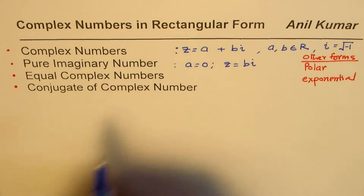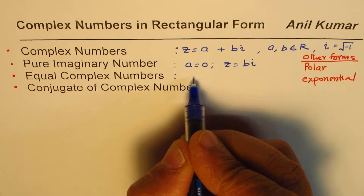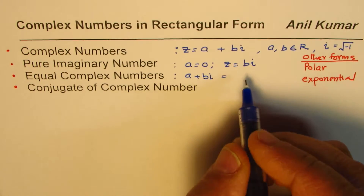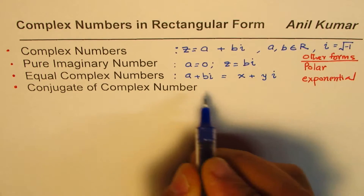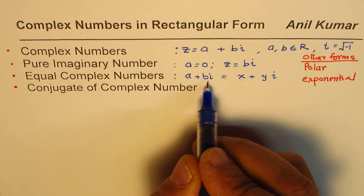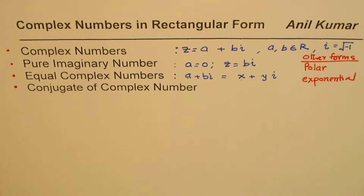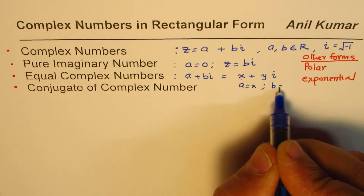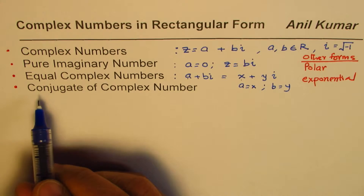The second thing we're going to understand is when two complex numbers are equal. If we have a complex number a plus bi equal to another complex number x plus yi, then the real part should equal the real part and the imaginary part should equal the imaginary part. So a should equal x and b should equal y for the two complex numbers to be equal.